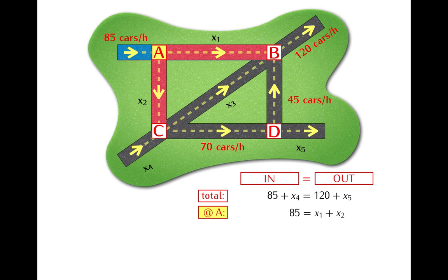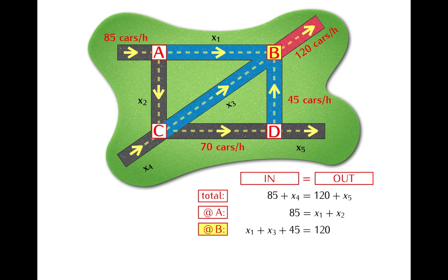At intersection B we have three streets that bring traffic in and the total flow in is x1 plus x3 plus 45 and then there is one street going out and this street carries 120 cars per hour.